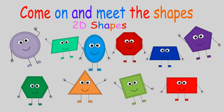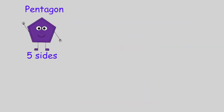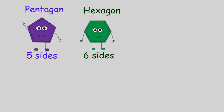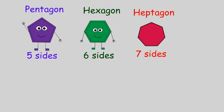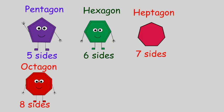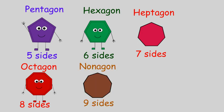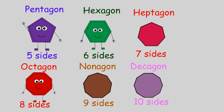Pentagon — five sides. Hexagon — six sides. Heptagon — seven sides. Octagon — eight sides. Nonagon — nine sides. Decagon — ten sides.